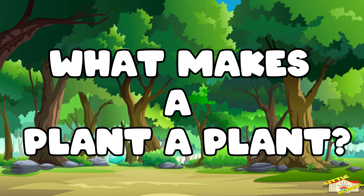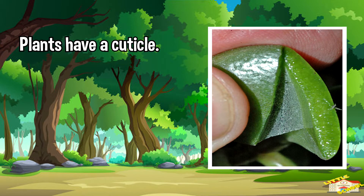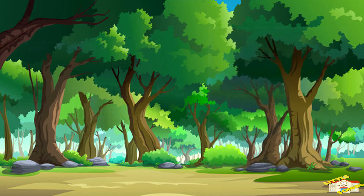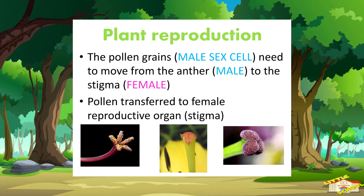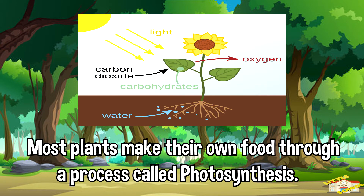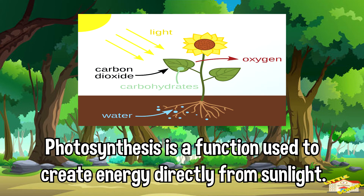What makes a plant a plant? Here are some examples of plant characteristics. Plants have a cuticle, a waxy layer on their surface that protects them and keeps them from drying out. They reproduce with spores or with sex cells. Most plants make their own food through a process called photosynthesis.